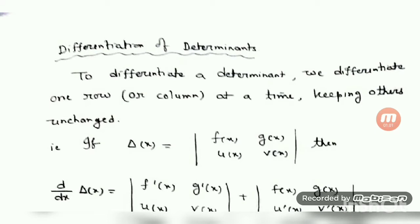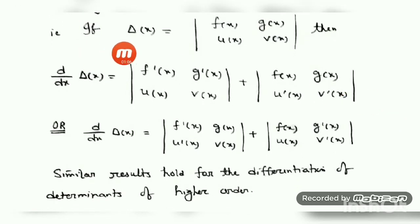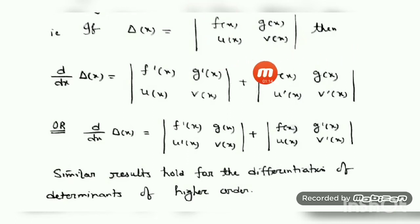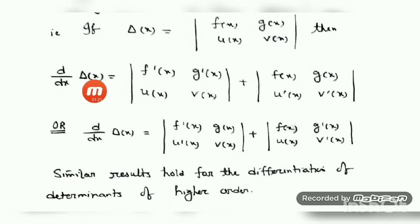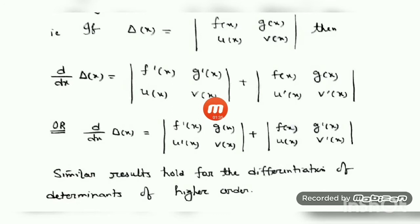Let me give an example of how to do this. Suppose this is a determinant — I consider it as Δ(x). If Δ(x) equals the 2×2 determinant with entries f(x), g(x), u(x), v(x), then if you want to find out the differentiation of Δ(x), that is d/dx of Δ(x), let us first differentiate the first row: d/dx of f(x) is f'(x), and d/dx of g(x) is g'(x). Keep the other row as it is, that is u(x), v(x).